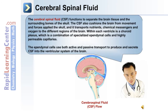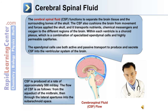The cerebrospinal fluid, or CSF, is in the subarachnoid space. It functions to separate the brain tissue from the surrounding bones of the skull, cushions the brain from movement and forces applied to the skull, and also transports nutrients, chemical messengers, and oxygen to different regions of the brain. Within each ventricle is a choroid plexus, a combination of specialized ependymal cells and highly permeable capillaries. The ependymal cells use both active and passive transport to produce and secrete cerebrospinal fluid into the ventricular system.